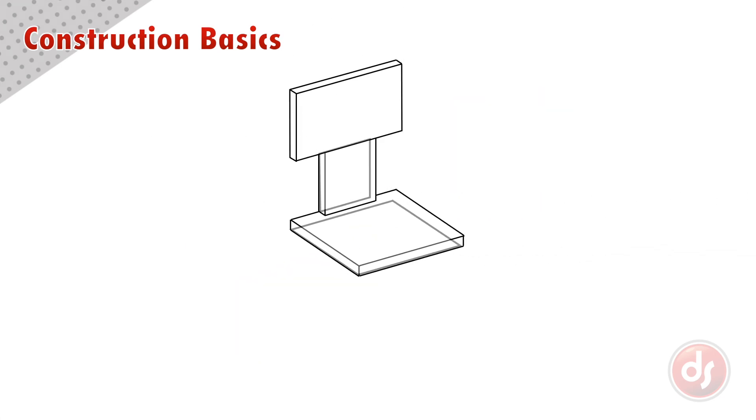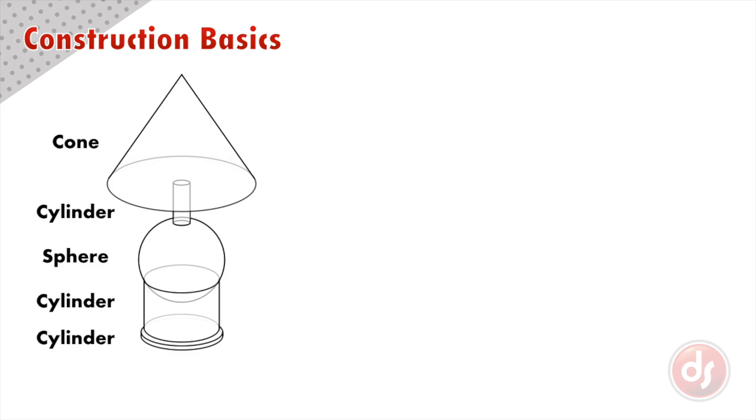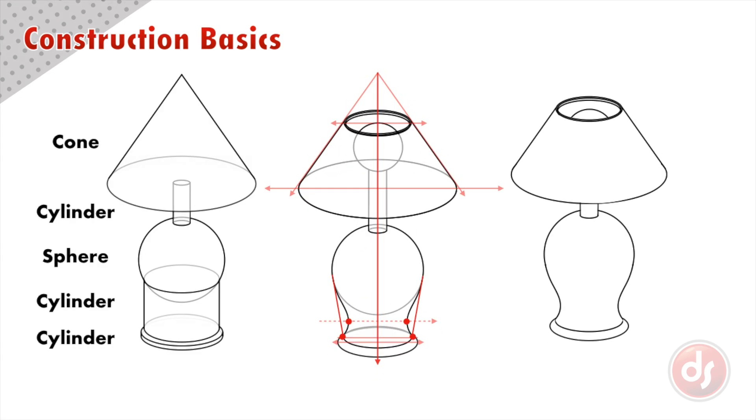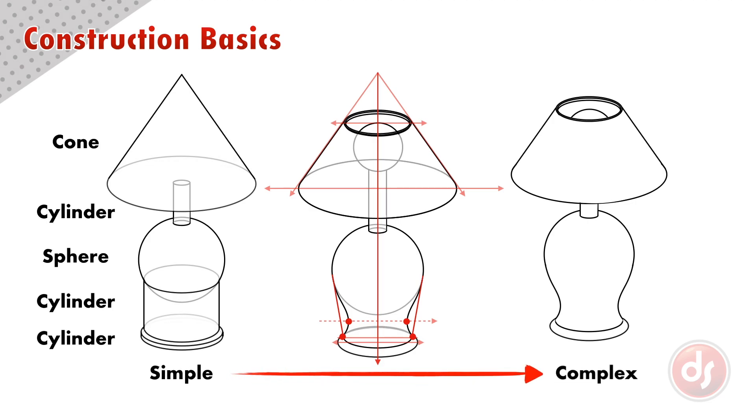Then we combine and modify these simple forms using construction to create more complex objects. We use simple forms like these and gradually get more complex through construction to make sure the underlying structure is correct before we put the details on top. Starting with the details makes it harder to get them all in the correct order. Simple to complex is the approach we will use in construction.